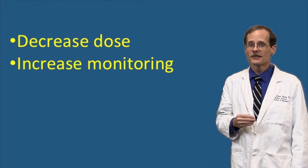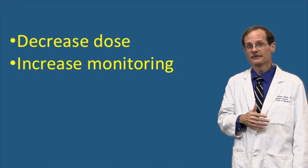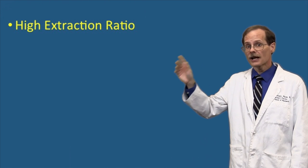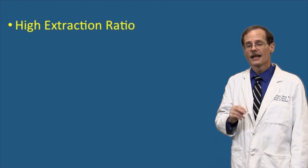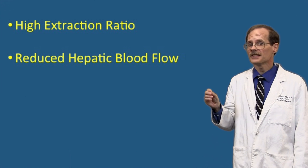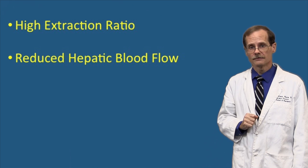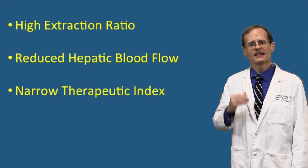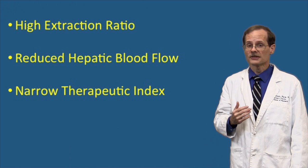Many sources, like the package insert, just suggest something along the lines of 'be extra careful.' So when should we be extra careful? If the drug has a high extraction ratio and thus the liver has a high intrinsic clearance; if the patient has a disease state that would reduce blood flow through the liver; and if it's a drug with a narrow therapeutic index and significant toxicities that might occur if serum concentrations get too high.